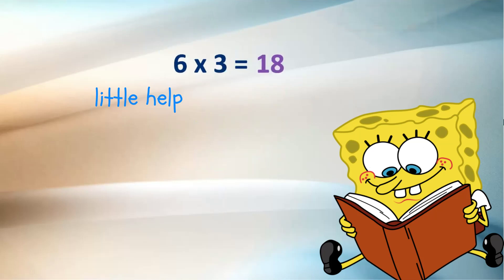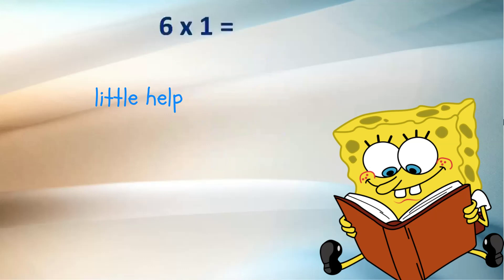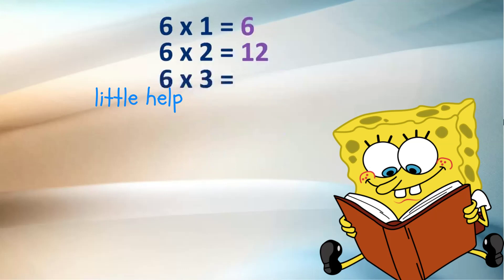6 threes are 18. 6 threes are 18. 6 threes are 18. 6 ones are 6, 6 twos are 12, 6 threes are 18.